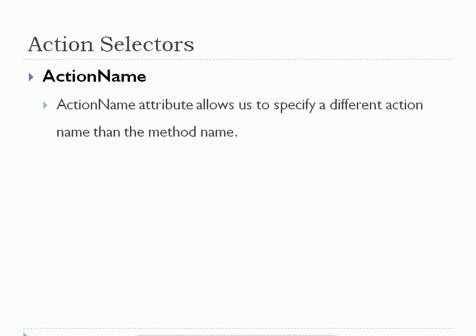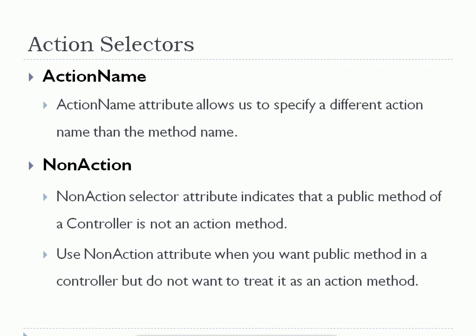You can directly change the method name, but suppose you call that method many times in your entire project — it is not a feasible solution to change the method name everywhere. The better way is to define the ActionName attribute and allow the user to call that action method by that name. The next attribute is NonAction. We studied that a public method of a controller class is treated as an action method, meaning it can be requested by the browser or client. Suppose we want to keep that method public but do not want it to be treated as an action method — in that case we use the NonAction attribute.